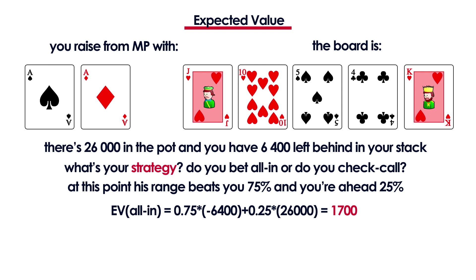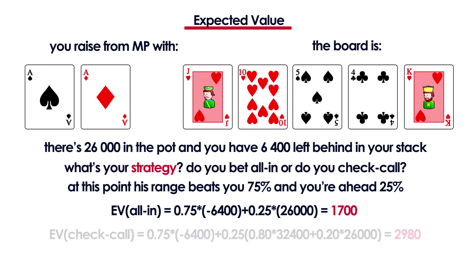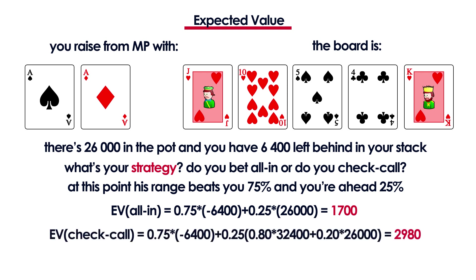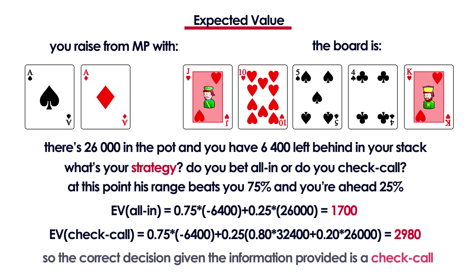What about the check-call? After your check, the button is going to shove all-in with all his hands that are beating you and with about 80% of the hands that he missed. So the expected value is (0.75 × −6400) + (0.25 × 0.80 × 32400) + (0.20 × 26000) = 2980. So check-calling is actually better in this spot, as in the long run it will earn you 1280 more than betting out.